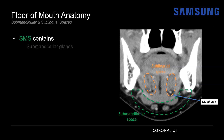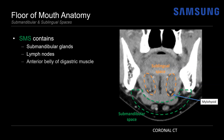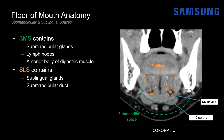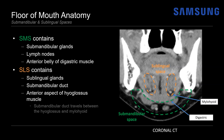The submandibular space contains the submandibular glands, lymph nodes, and the anterior belly of the digastric muscles, whereas the sublingual space contains the sublingual glands, the submandibular duct, and the anterior aspect of the hyoglossus muscle. The submandibular duct travels between the hyoglossus and the mylohyoid muscles, making the hyoglossus a useful landmark for finding the duct on ultrasound.